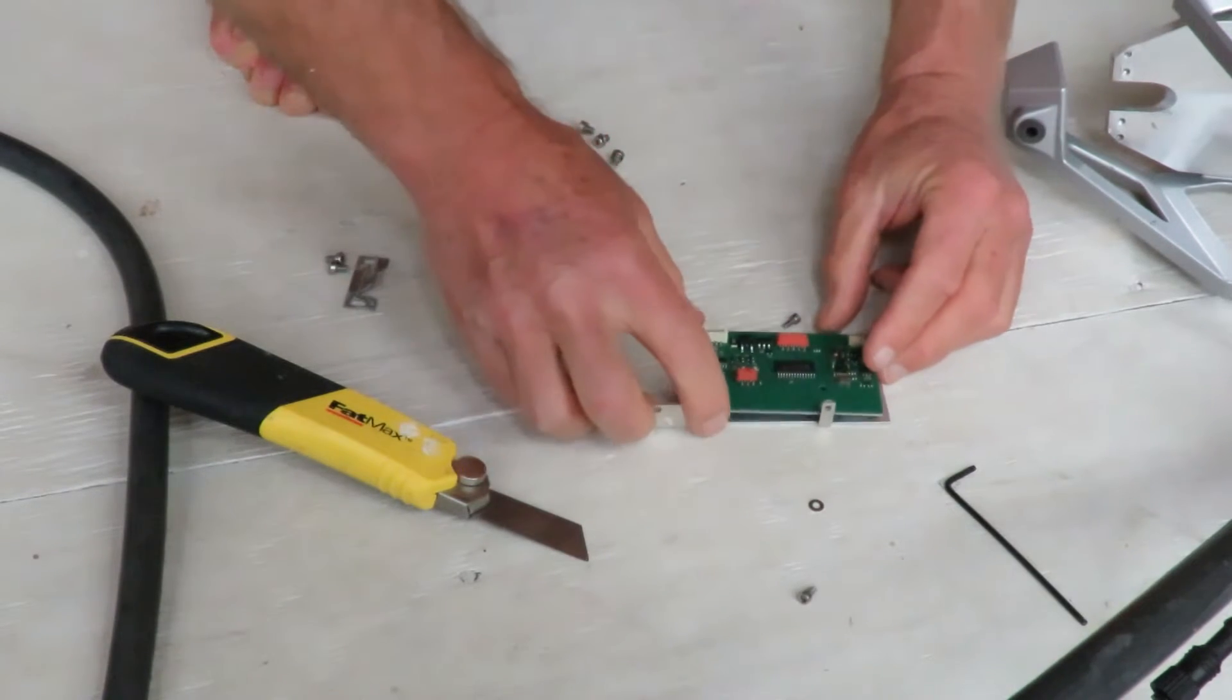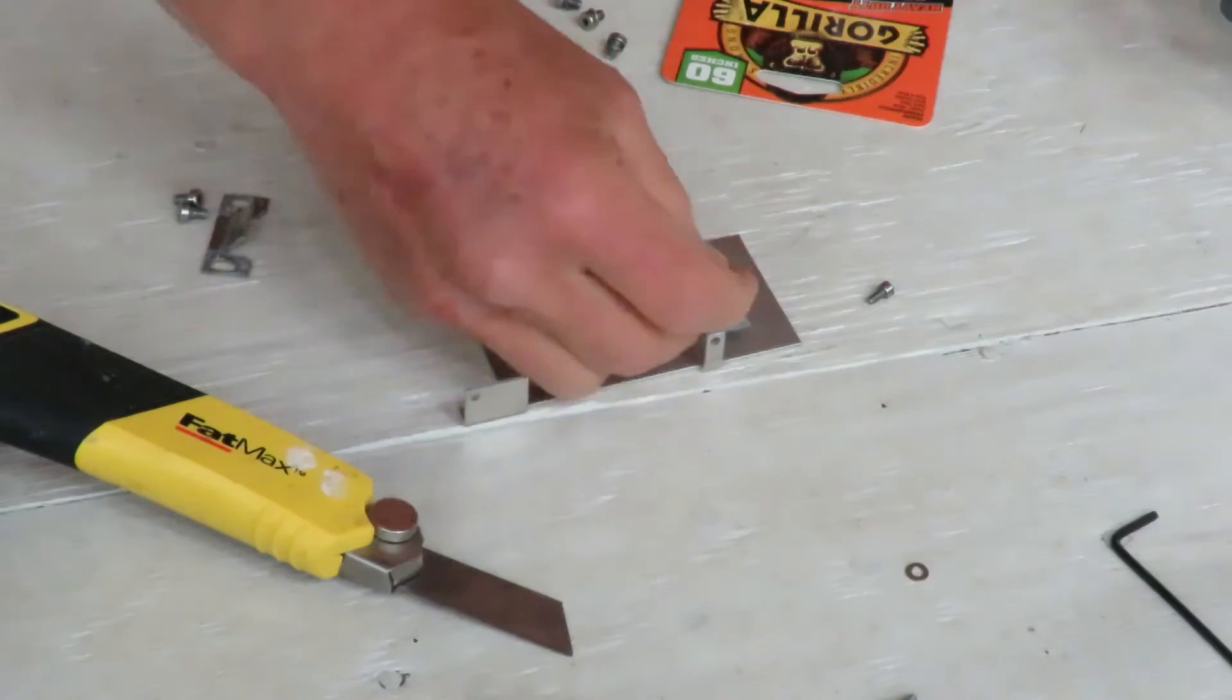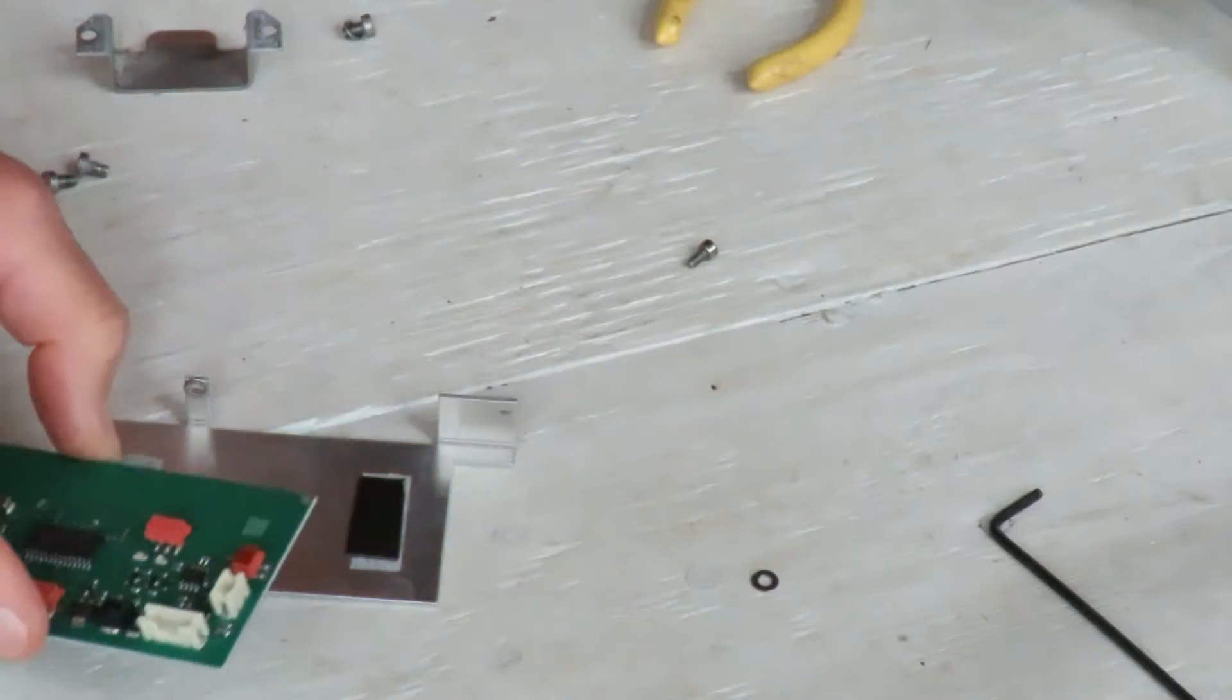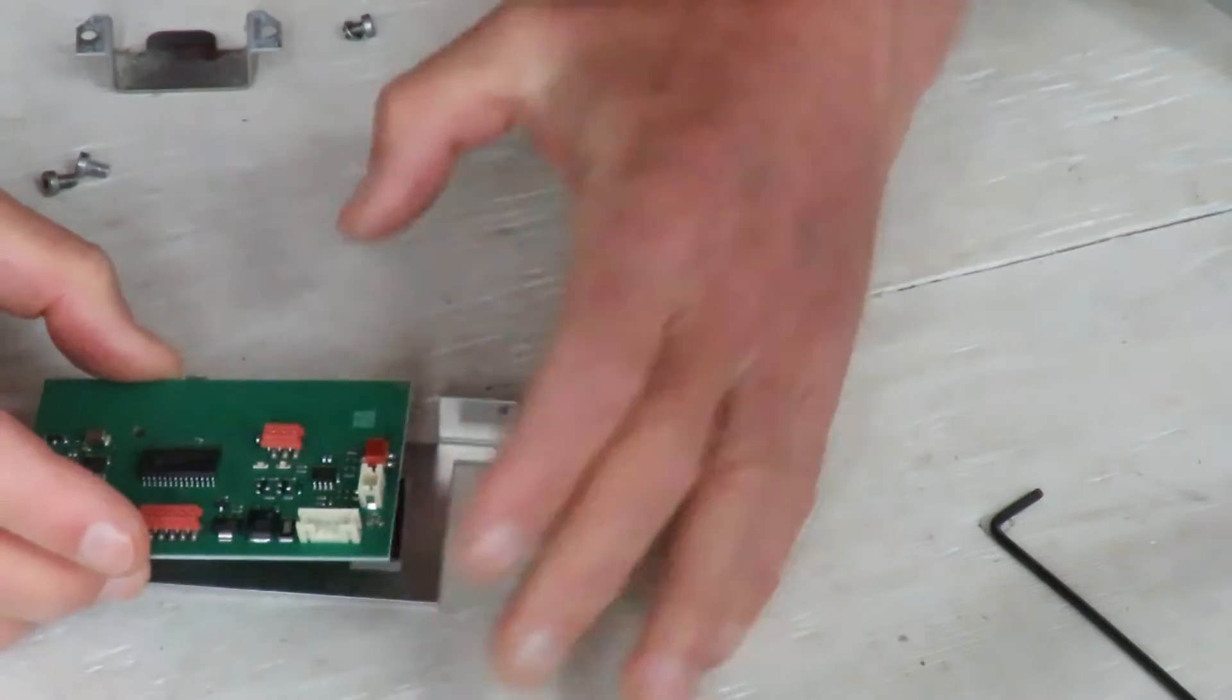Next, we mount the new board to the plate so we don't forget how it was mounted. We start with brand new double stick tape. So the board goes like this.